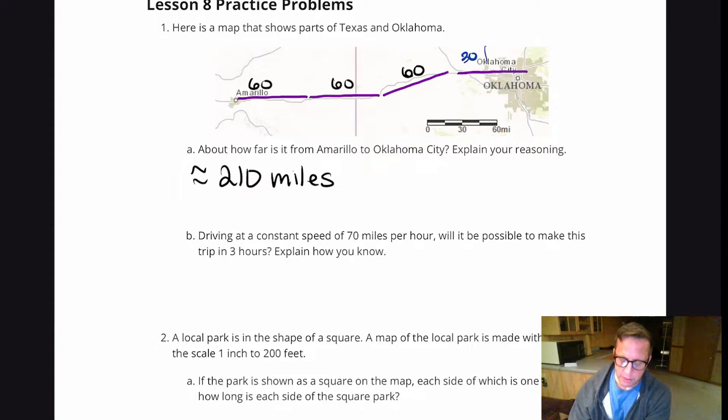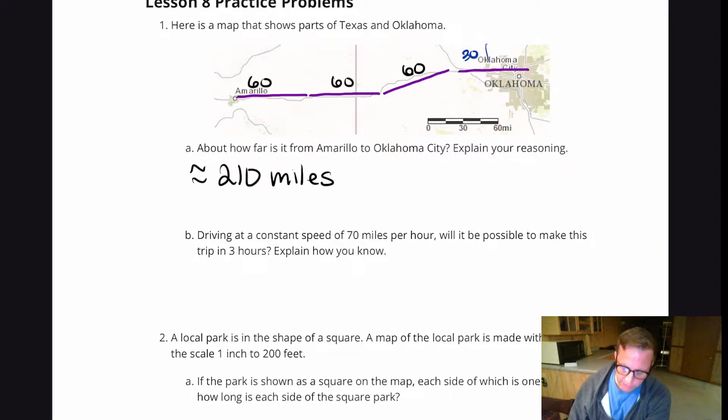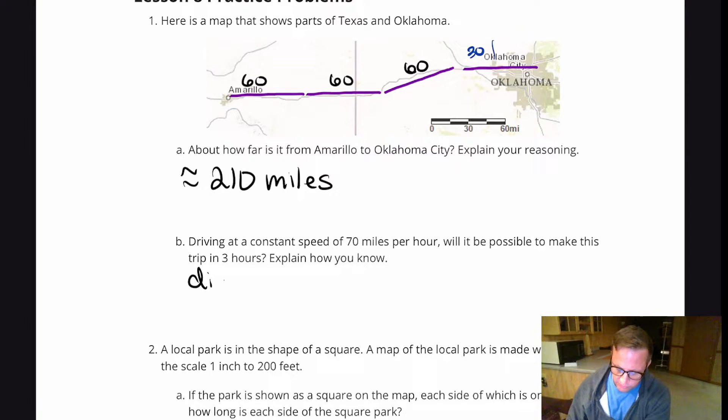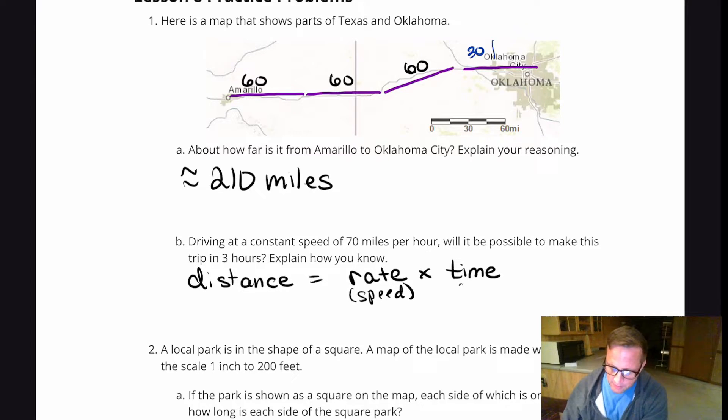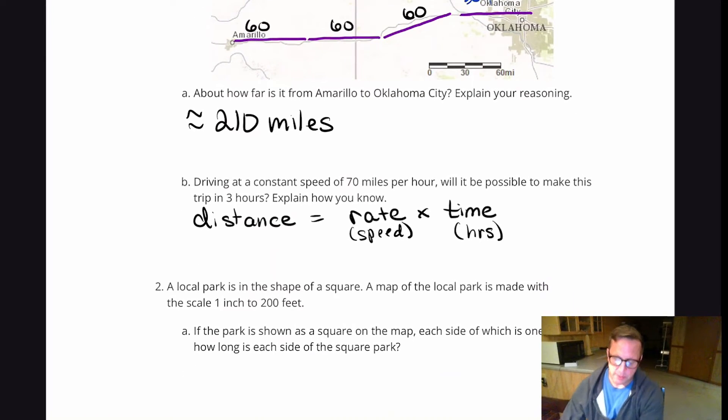Alright, so not that you guys probably have this off the top of your head, but I probably talked about it in the lesson. The distance formula, in case you didn't already know, distance equals rate, which is just another way of saying speed times time. The time has to be in hours. So distance equals rate times time.